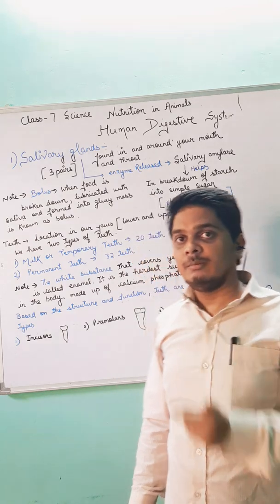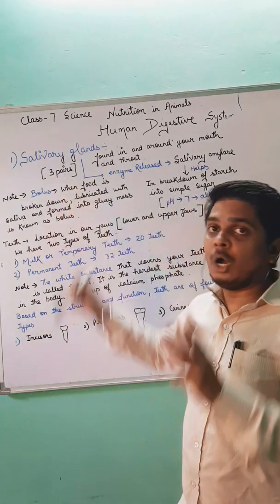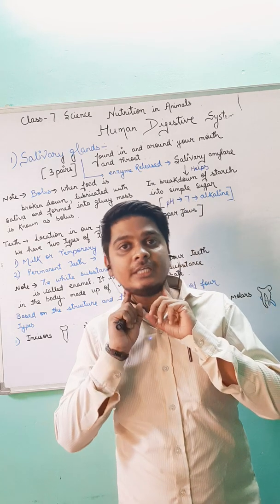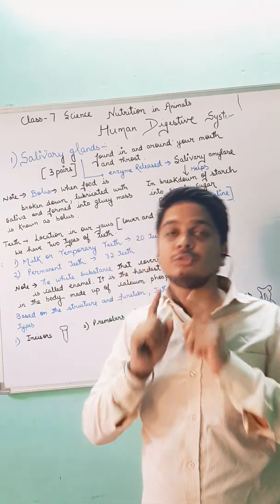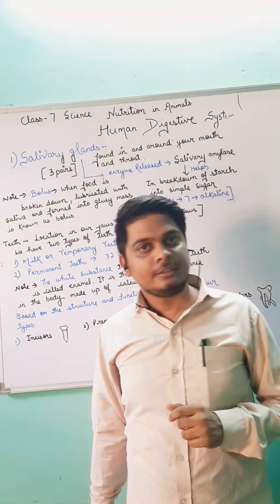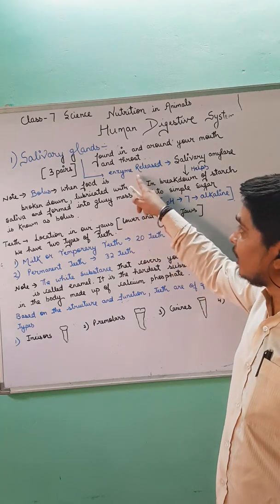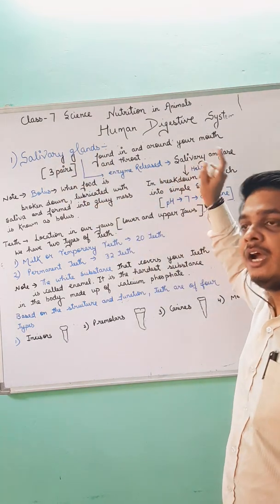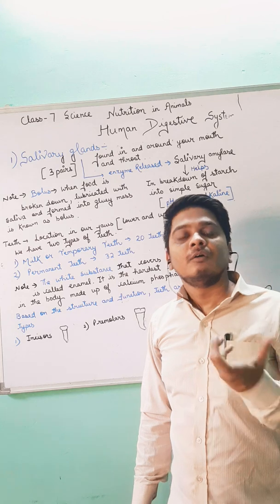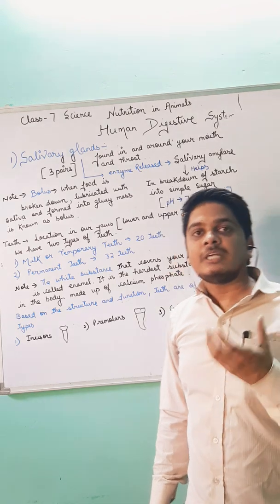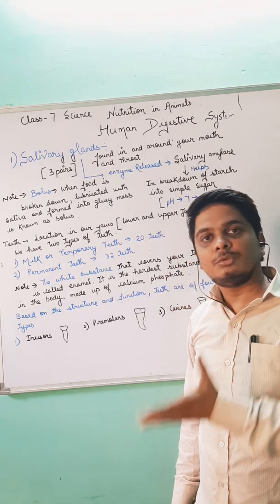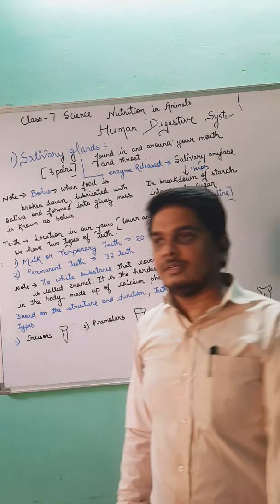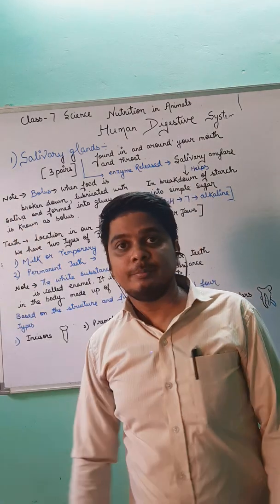The function of salivary amylase is to help in the breakdown of starch into simple sugar, and it maintains the pH up to seven. Remember: we have three pairs of salivary glands, located near the mouth, behind your tongue, or in your throat.